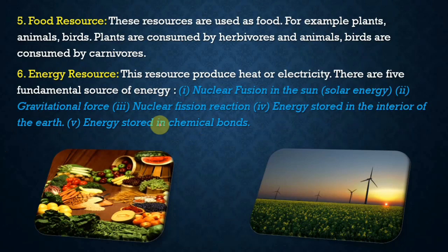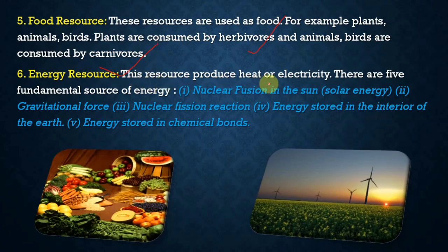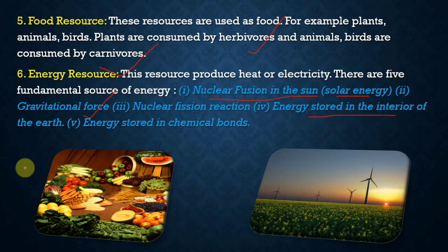Food resources are used as food — for example plants consumed by herbivores, and animals and birds consumed by carnivores. Energy resources produce heat or electricity. The five fundamental sources of energy are: nuclear fusion in the sun (solar energy), gravitational force, nuclear fission reaction, energy stored in the interior of the Earth, and energy stored in chemical bonds.